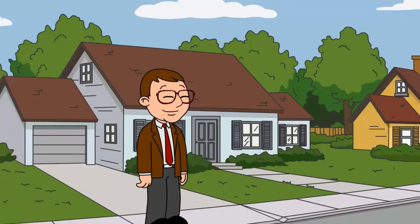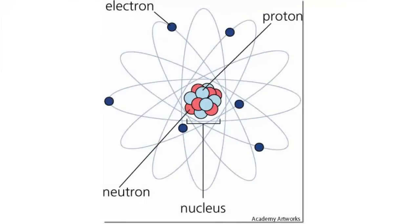Everything around us is made from atoms. From the grass to the road. This is an atom. It is composed of neutrons and protons, which are in the nucleus. Electrons fly around the nucleus.